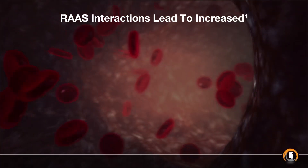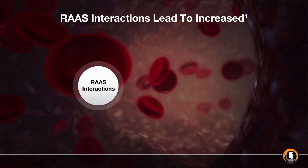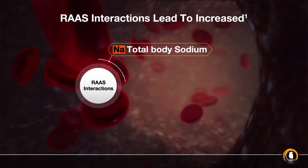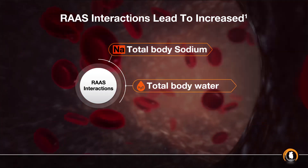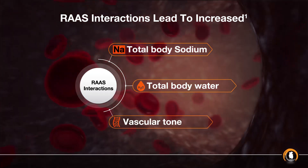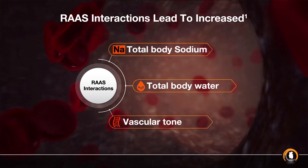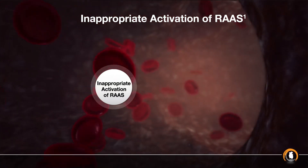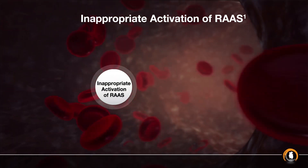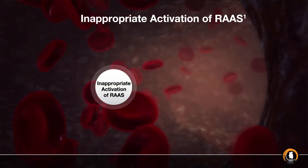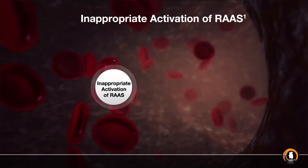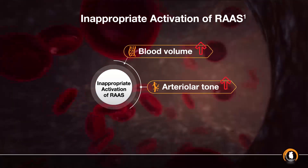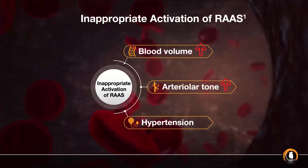The net effect of these interactions is an increase in total body sodium, total body water, and vascular tone. Inappropriate activation of the RAS system causes a chronic elevation of circulating blood volume and arteriolar tone, resulting in hypertension.